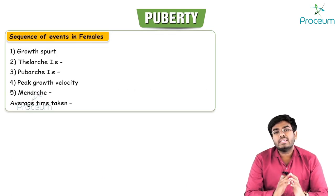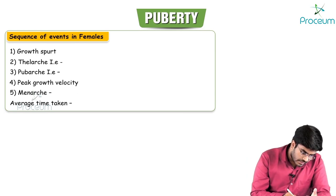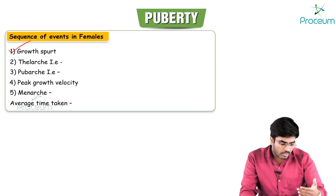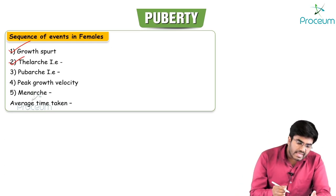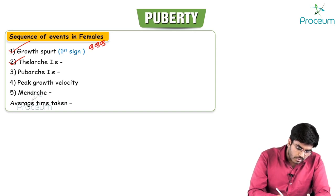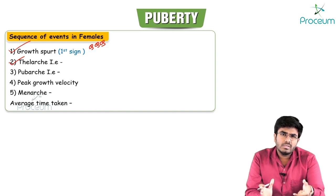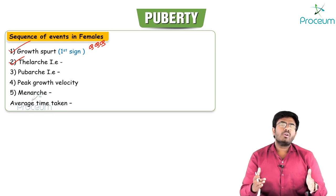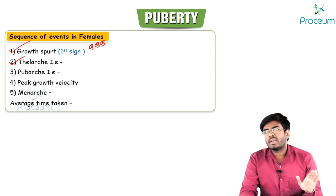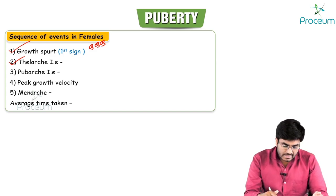The sequence of pubertal events in a female: the first event is growth spurt — an increase in height. This is followed by thelarche, which means breast development. Growth spurt is the first sign, but it is not a noticeable or visible sign because an increase in growth can't be easily detected. The first visible sign during puberty in a female is breast development — thelarche.